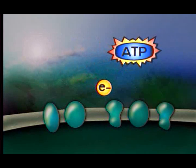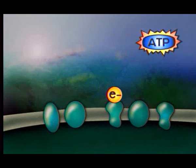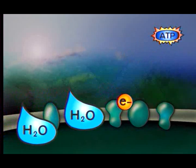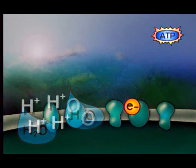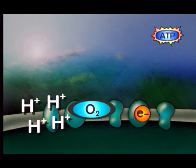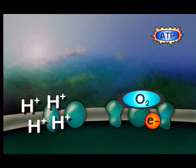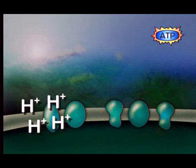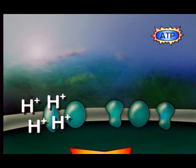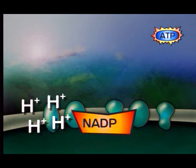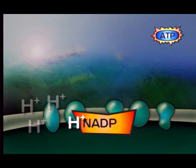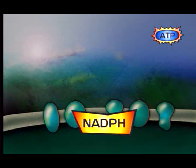While this is happening, the energy of sunlight also leads to the splitting of water molecules. Oxygen is formed and released into the atmosphere. Hydrogen ions also result from the splitting of water. Another molecule is formed when electrons are transferred to a substance called NADP. This allows NADP to bind to a hydrogen ion. The resulting product, NADPH, is another high-energy molecule.